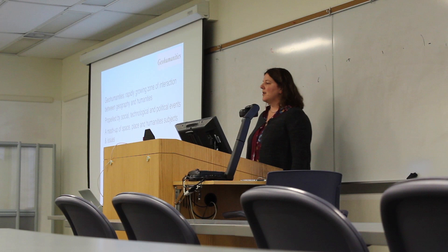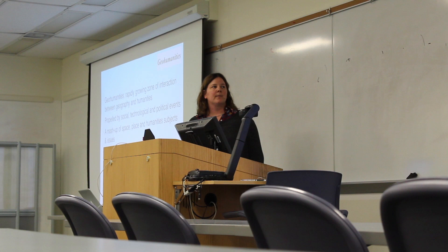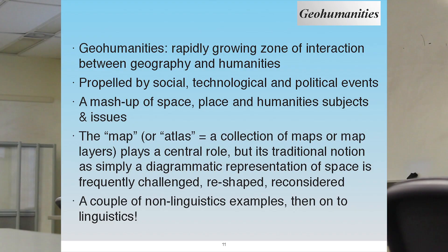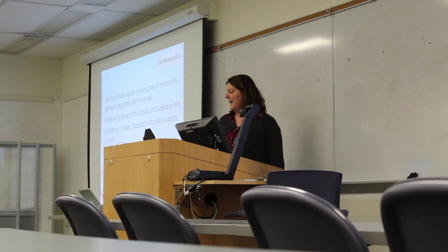When I started reading around about mapping in my work, I came across an interesting cross-disciplinary movement termed geohumanities. Geohumanities can be defined as a zone of interaction and integration between geography and the humanities. Traditionally, a scholar might need a map maker to make a map for them and the relationship would end there. But the idea of geohumanities is that both disciplines have something substantial to bring to each other — it's a mashup of space, place, and humanities subjects — and the map plays a central role but also becomes reconceived, redesigned, and reimagined.